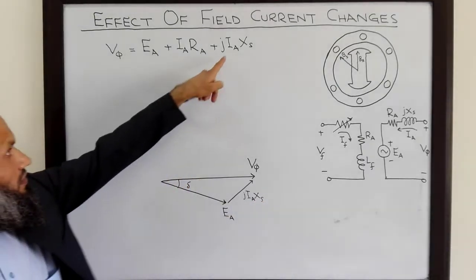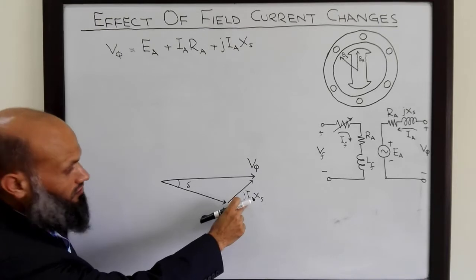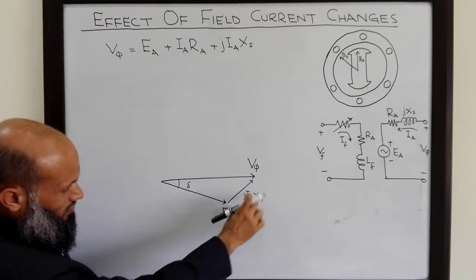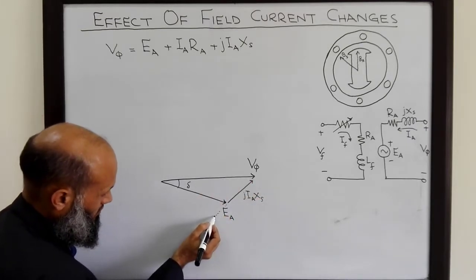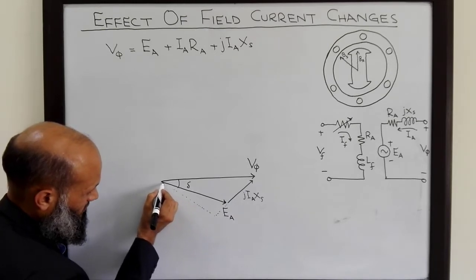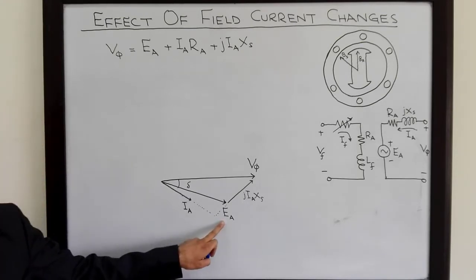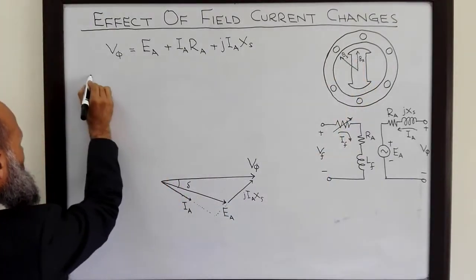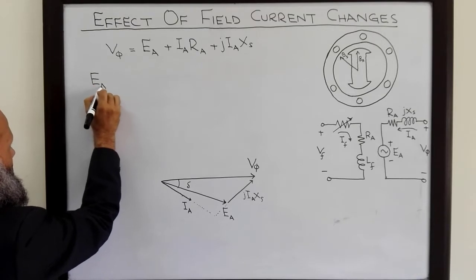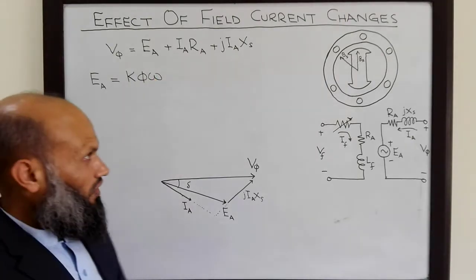What is the phasor for Ia? Since the operator j adds an angle of 90 degrees to Ia, Ia must be perpendicular to the phasor jIaXs. We also know that Ea is produced due to the rotor magnetic field Br, and Ea is given by the relation Ea = Kφω.